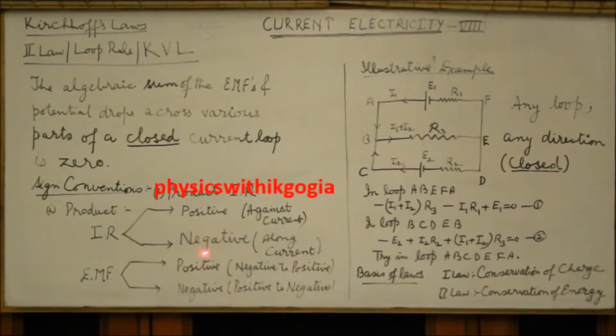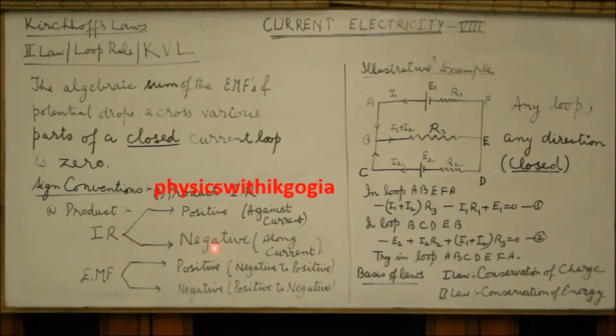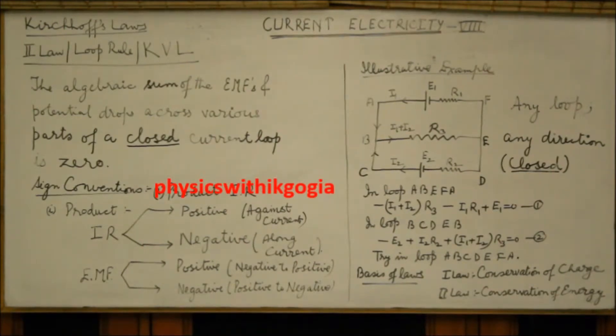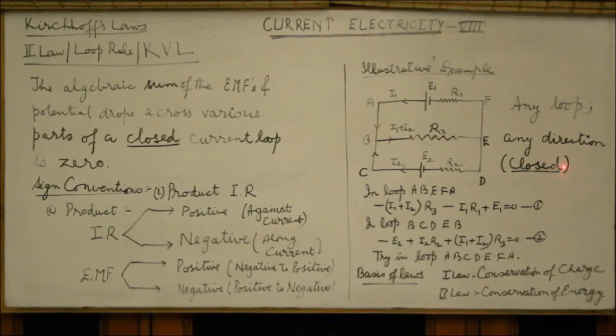In order to understand the application of these sign conventions, let's take an illustrative example. Let's consider the circuit shown here. Remember, in order to apply Kirchhoff's voltage law, you can take any loop in any direction. The only condition is the loop should be closed.